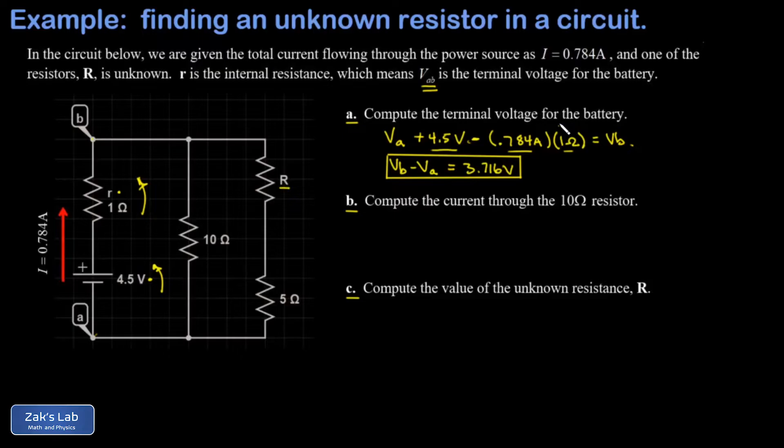In part B, we want to get the current through the 10 ohm resistor. And we have the potential difference across that resistor because the voltage at the high side of that 10 ohm resistor is the same VB.